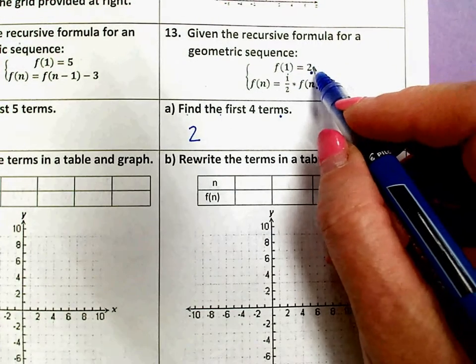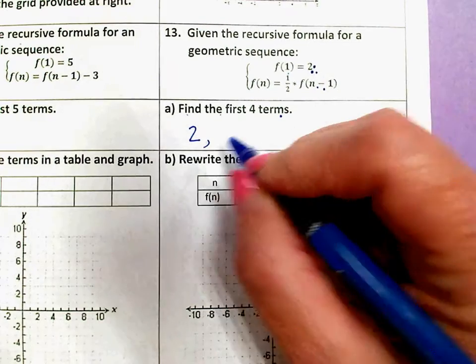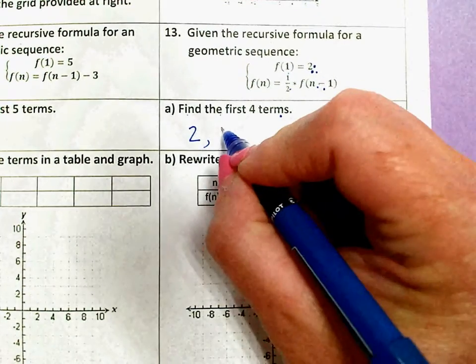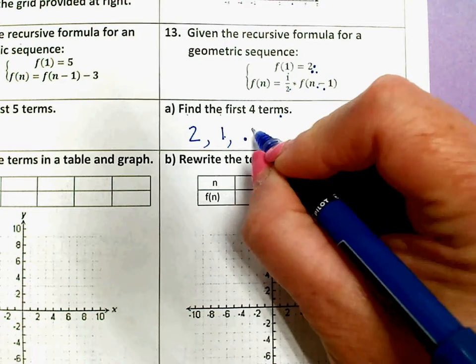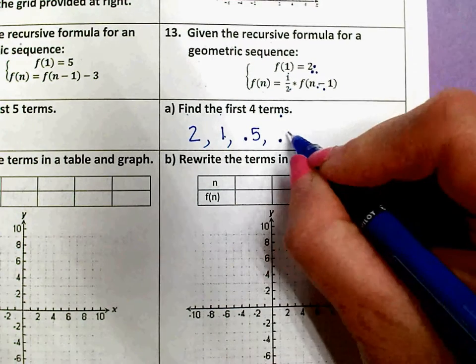So the last term I knew was 2, that's my first term. My second term is 1 half times 2. My third term is 1 half times 1. My fourth term is half of that again.